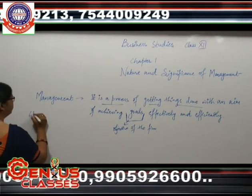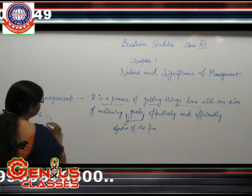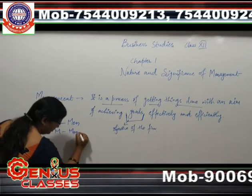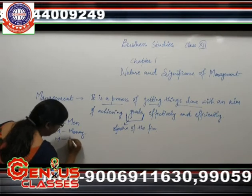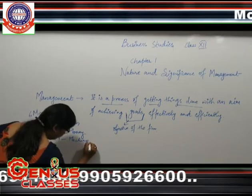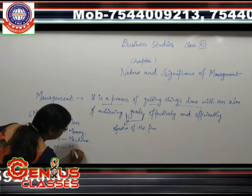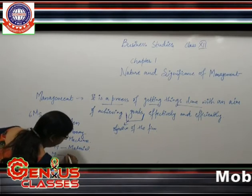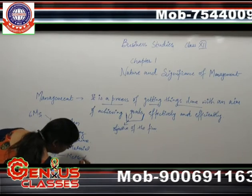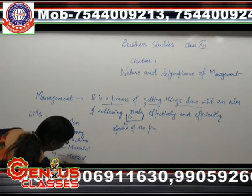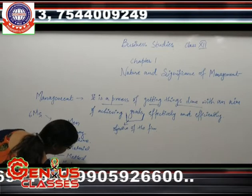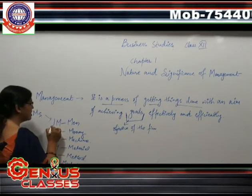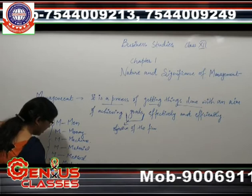We have six M's. These six M's are: M for men, M for money, M for machine, M for material, M for method, and M for market. In our day-to-day life, we deal with these six M's and they are very important for us.